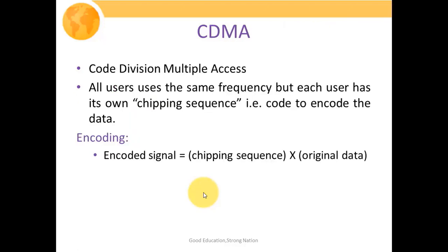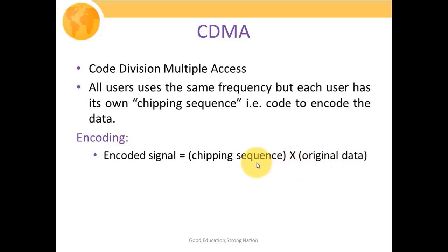Now we will discuss CDMA — code division multiple access. All users use the same frequency, but each user has its own chipping sequence, or coded sequence, by which it encodes its information. The encoding process in a CDMA system is: encoded data equals chipping sequence multiplied by original data. We multiply the original data with the chipping sequences. The chipping sequence is a chip code consisting of zeros and ones, converted into polar signaling — one is represented as +1 and zero as -1 — and that chipping sequence is multiplied with the original data.